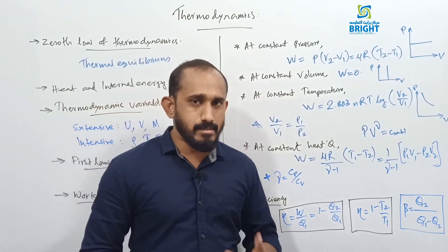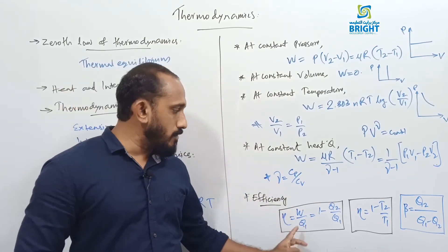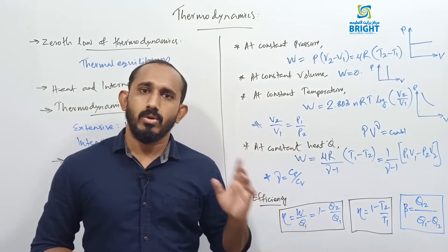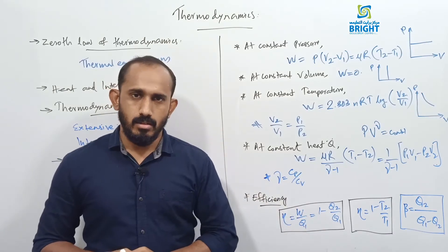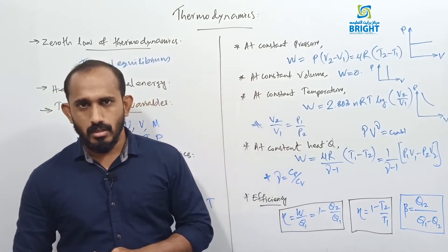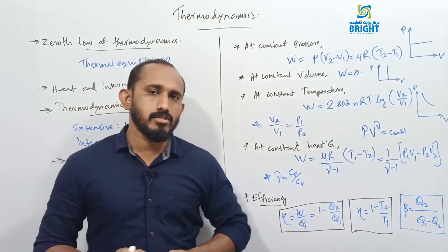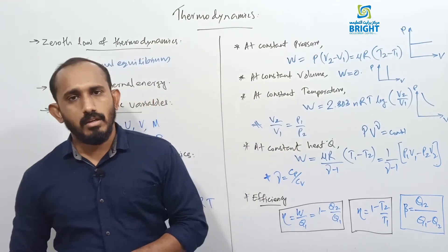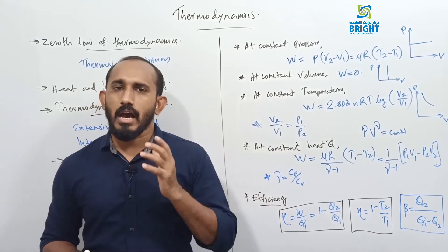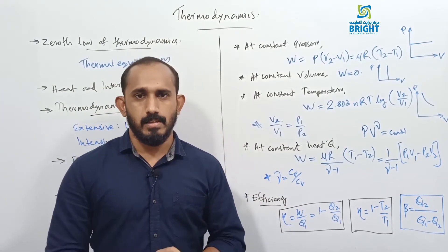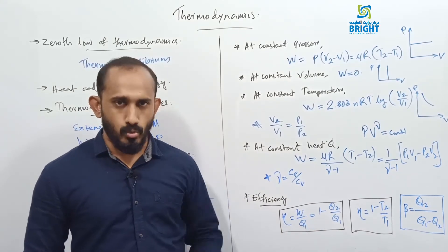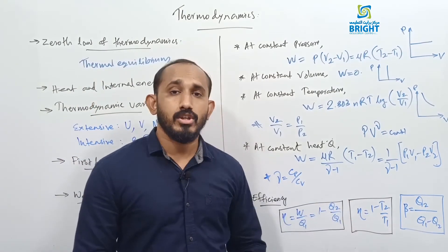Maximum efficiency would be 100%, meaning Q2 = 0 and all absorbed heat converts to work. Practically this is not possible, but theoretically Carnot designed an engine called the Carnot engine. Through reversible and irreversible processes in four steps, he found the maximum efficiency. In terms of temperature: efficiency = 1 − T2/T1 = 1 − Q2/Q1, since Q2/Q1 = T2/T1 for a Carnot engine.